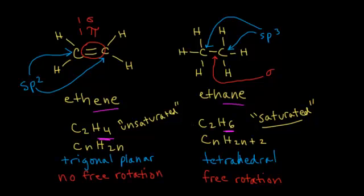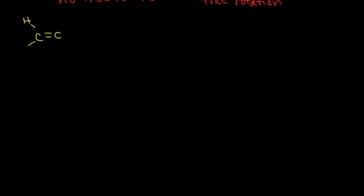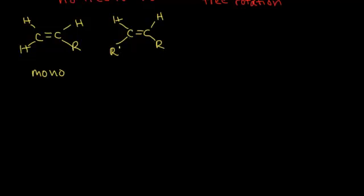Let's look at some more alkenes. Starting with all hydrogens on the double bond, if we replace one hydrogen with an R group, we get a monosubstituted alkene. Removing another hydrogen and adding R prime gives a disubstituted alkene. Keeping one hydrogen and adding R, R prime, and R double prime gives a trisubstituted alkene.